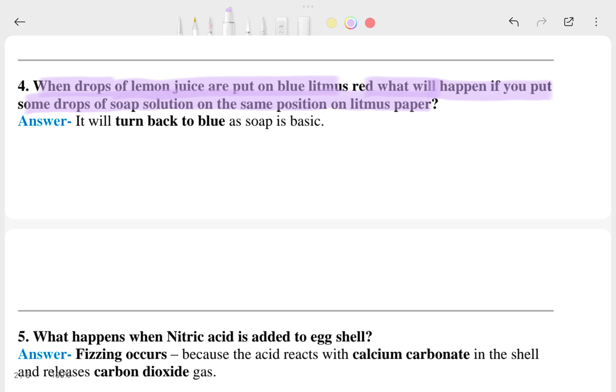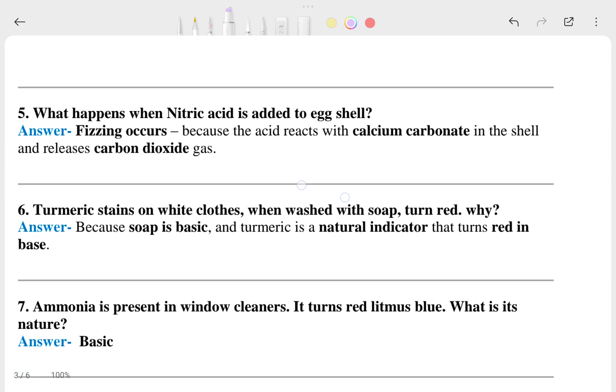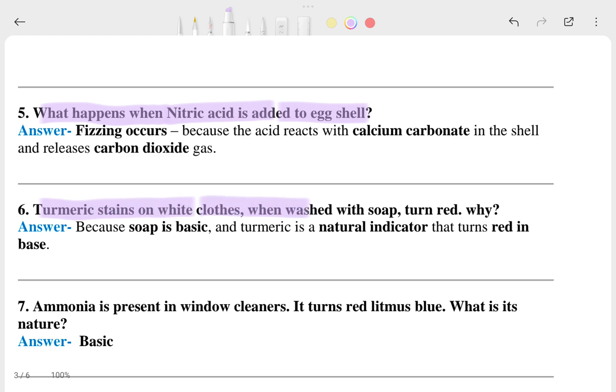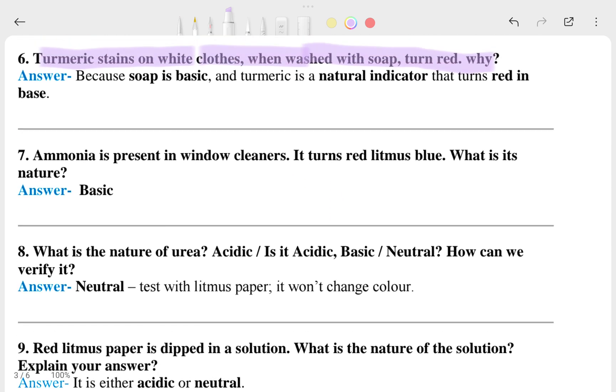Fifth question: what happens when nitric acid is added to an egg shell? Fizzing occurs because of the acidic reaction. Sixth question: turmeric stain on white cloth when washed with soap turns red. Why? Because soap is basic and turmeric is a natural indicator that turns red in bases.